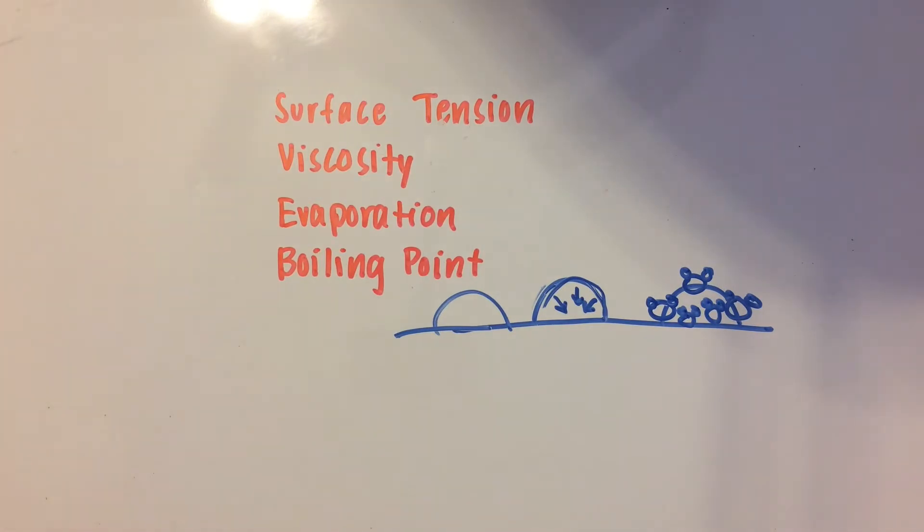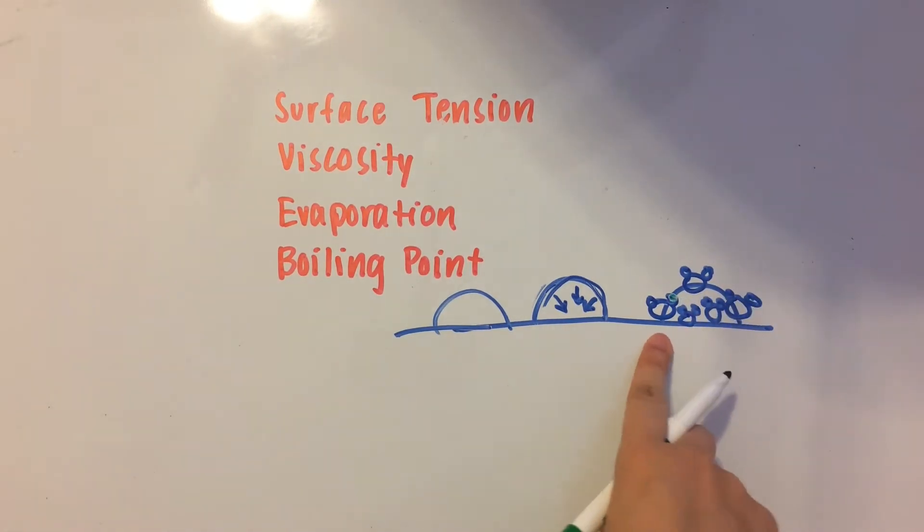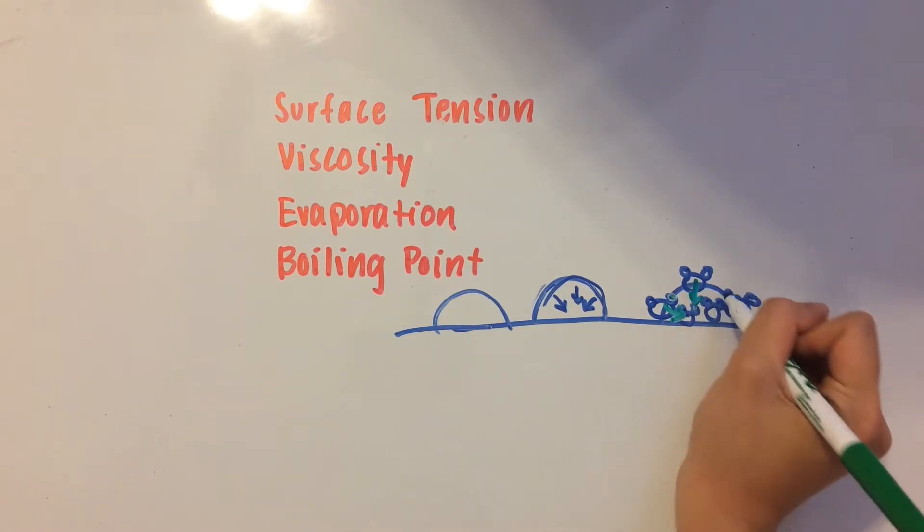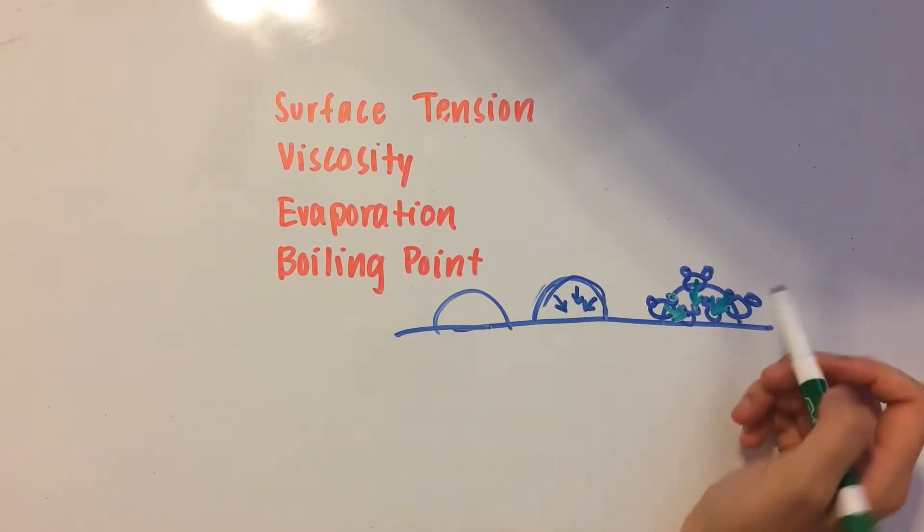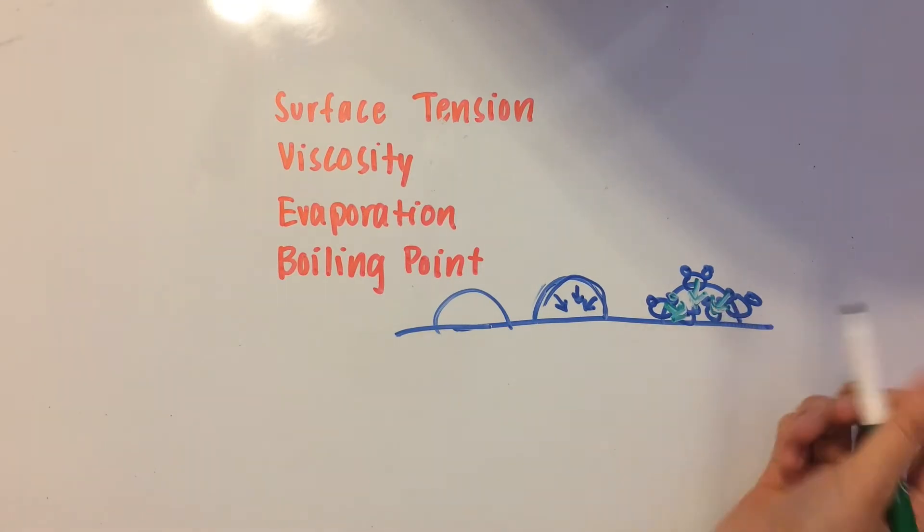You've probably seen my other video on hydrogen bonds. What they basically are is that the partial positive hydrogens on one water molecule are attracted to the partial negative oxygens of another water molecule. The outer water molecules are pulled in by those inner ones, creating this sort of dome shape.